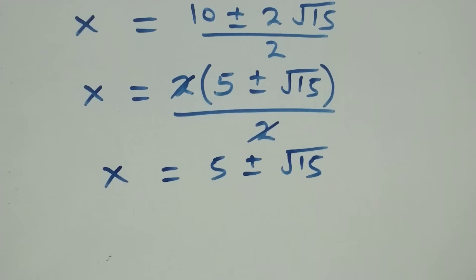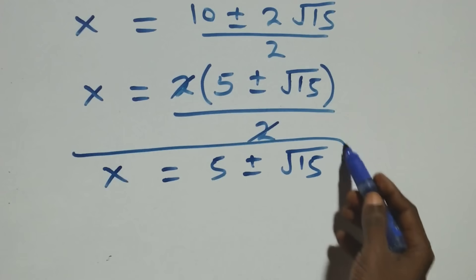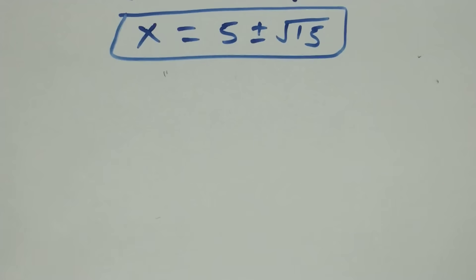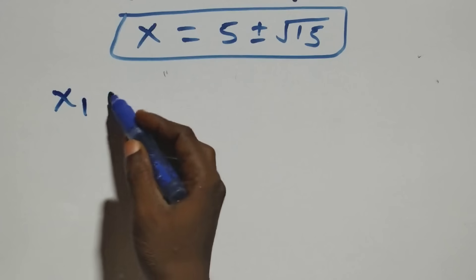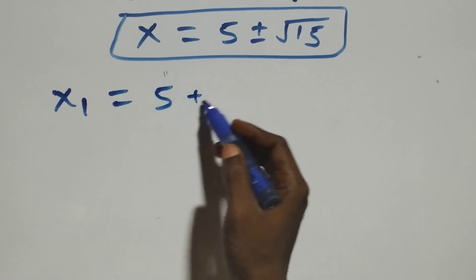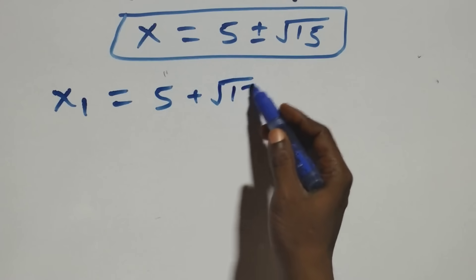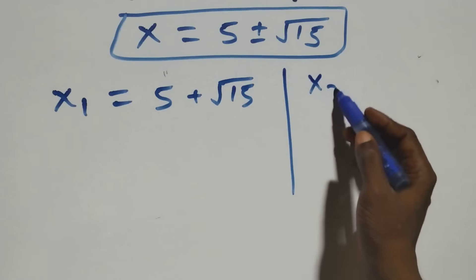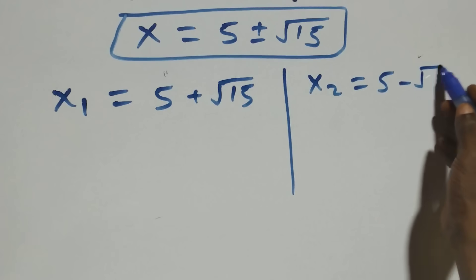We have two possible values of x: x₁ equals to five plus root fifteen, and x₂ equals to five minus root fifteen.